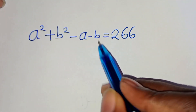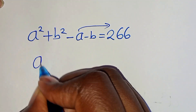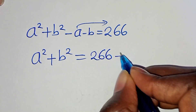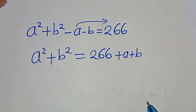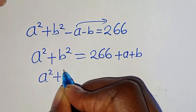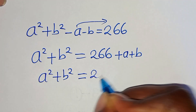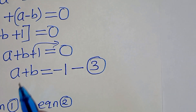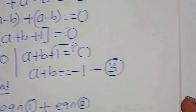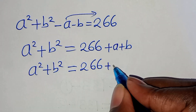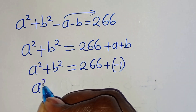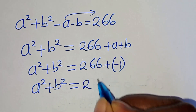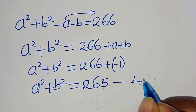Let's take minus a minus b to the right hand side, so that a squared plus b squared equals 2.66 plus a plus b. From equation 3, a plus b equals minus 1, so substituting: a squared plus b squared equals 2.66 plus (minus 1), which equals 2.65. Let's call this equation 4.